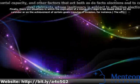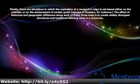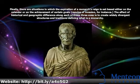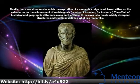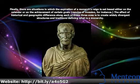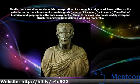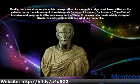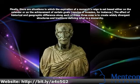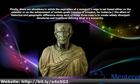Finally, there are situations in which the expiration of a monarch's reign is set based either on the calendar or on the achievement of certain goals, repulsive invasion for instance. The effect of historical and geographic difference along each of these three axes is to create widely divergent structures and traditions defining what is a monarchy.